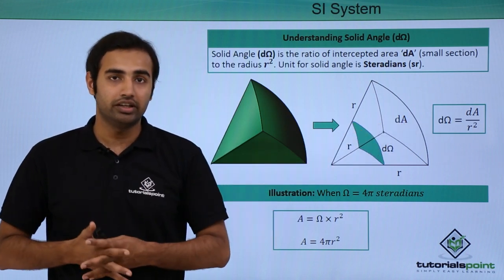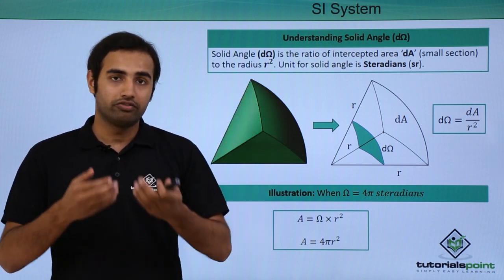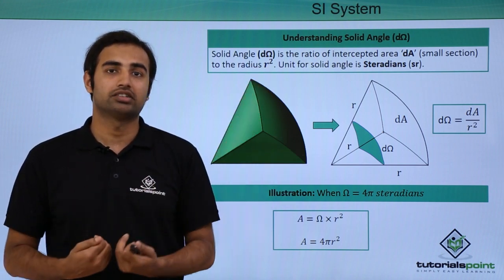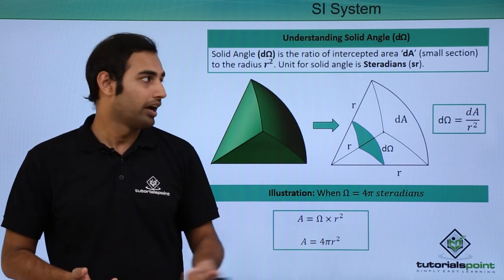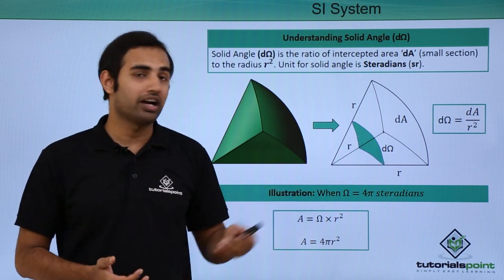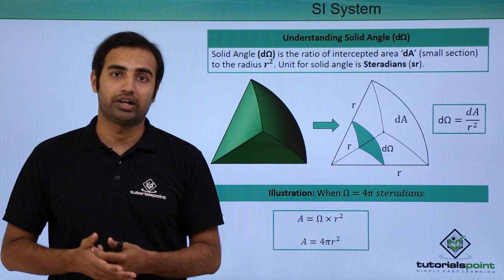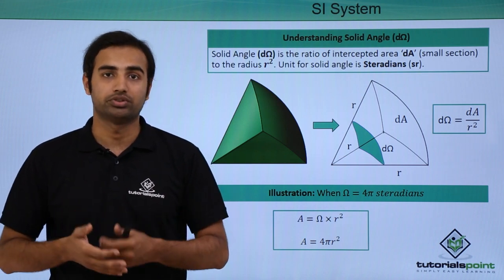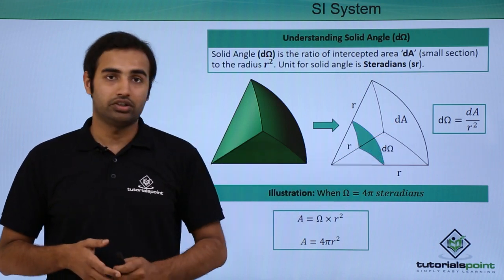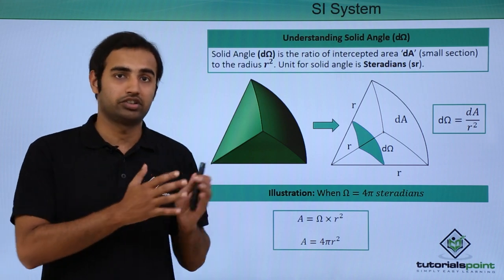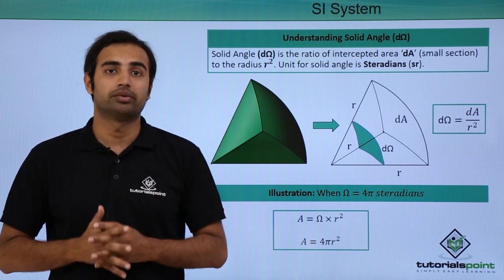To get a physical feeling: if I complete the entire sector into a sphere, the angle subtended at the center is 4π steradians, and cross-multiplying by r², the surface area of the sphere comes out to be 4πr², which we already know is true. So this definition of solid angle, along with that of plane angle, must be remembered properly.